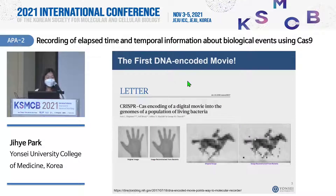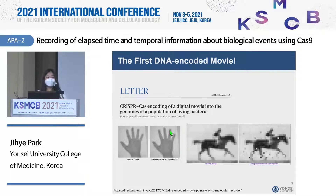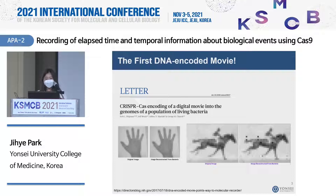Using this CRISPR-Cas system, there was one interesting paper published in 2017. This group succeeded in storing an image and a video clip using the DNA sequences of living bacteria. Based on this paper, we realized we can actually store various information using DNA sequences of living cells. We were especially interested in recording temporal information, because it was quite challenging to accurately record time information using DNA sequences.